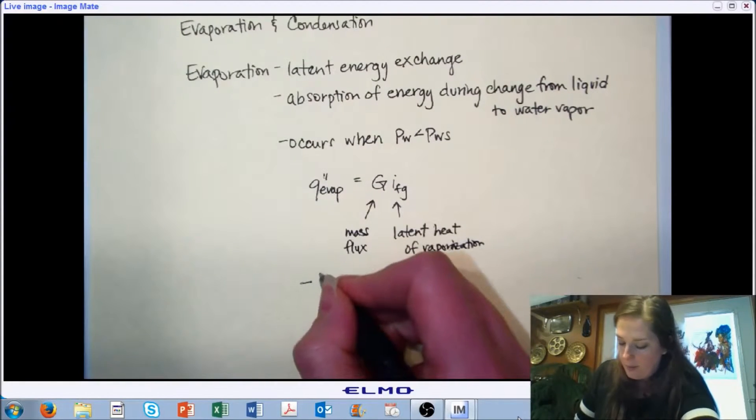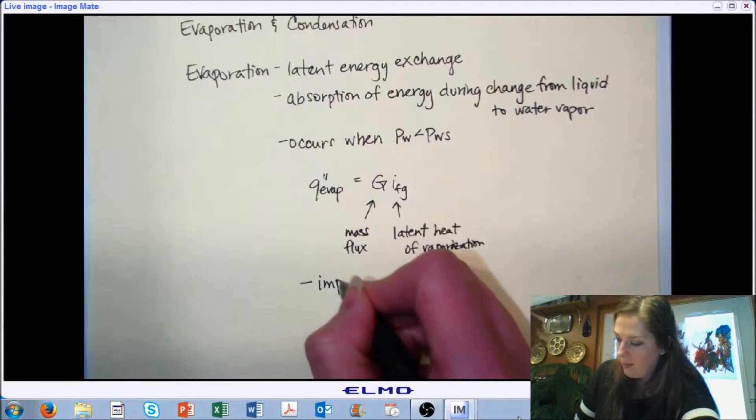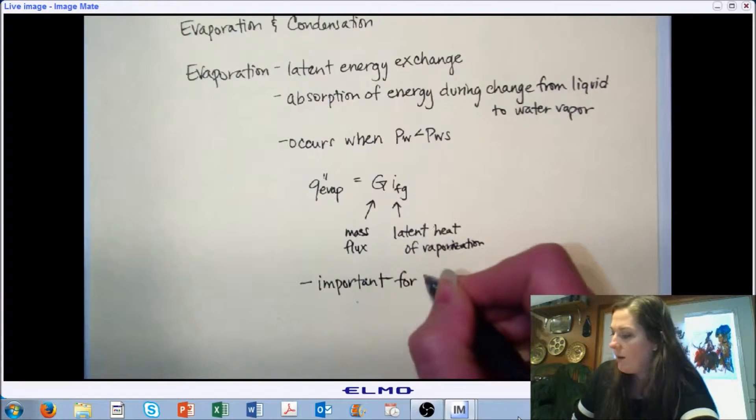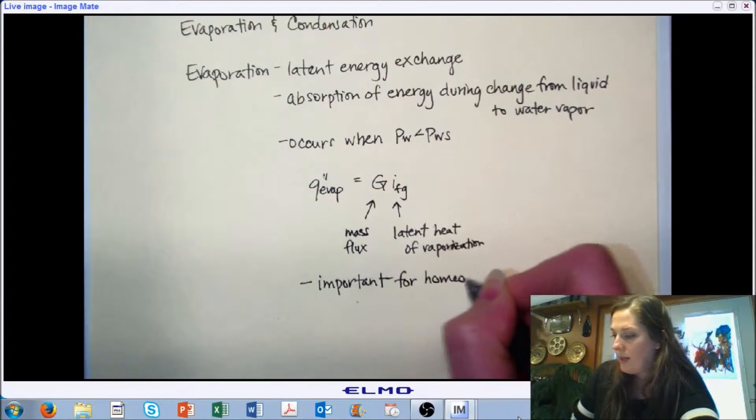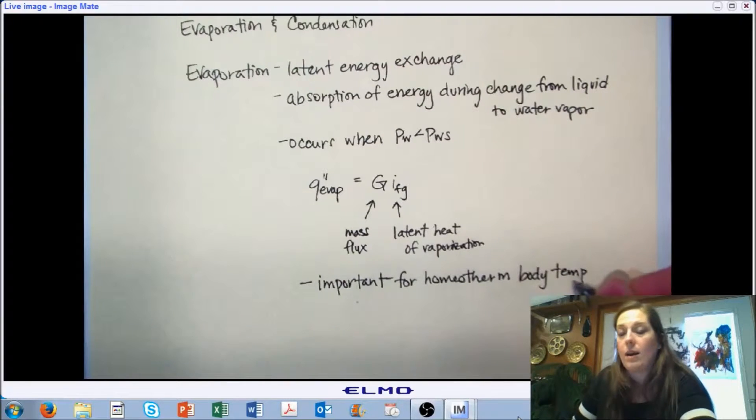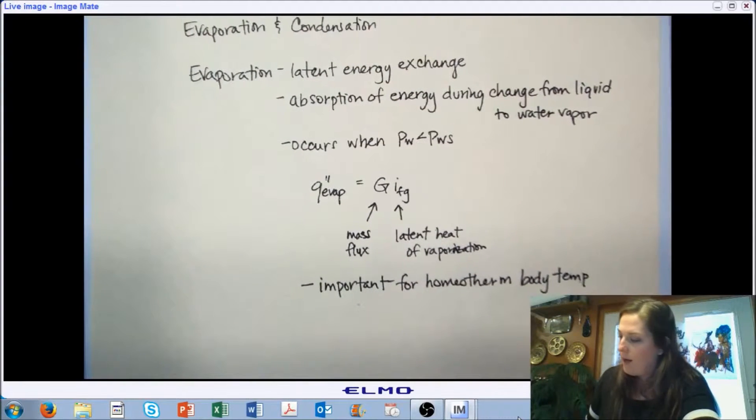The process of evaporation is important when we're thinking about homeotherms and their ability to regulate their body temperature, so it's kind of tying in chapter four as well. When we look at the importance of evaporation, we could be talking about it for evaporative cooling systems, so we saw it with our psychrometric processes. It's very important there, but it's also very important from our chapter four looking at the occupant within our environment.